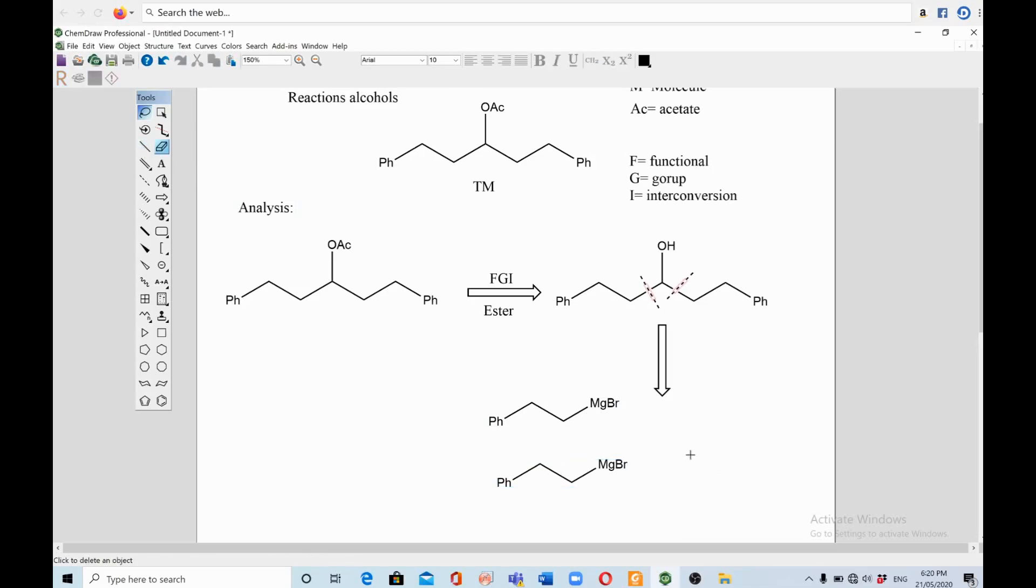In retrosynthesis you always have a nucleophilic part and an electrophilic part. So here the electrophilic part will be an ester. The simplest ester. An ester is a derivative of carboxylic acid containing a carbonyl group and an alkoxy group.